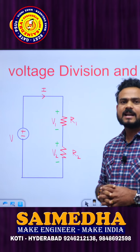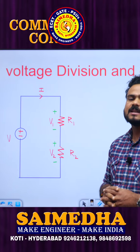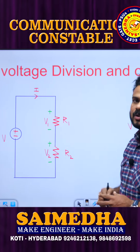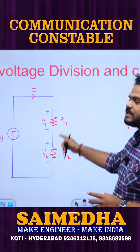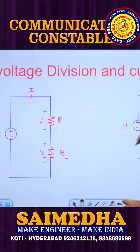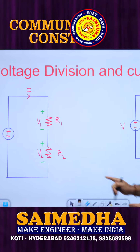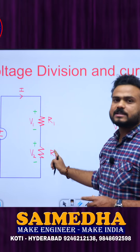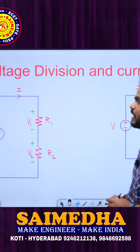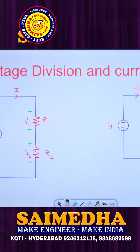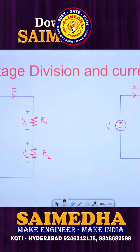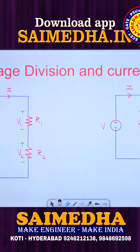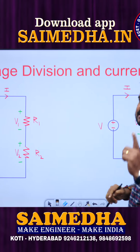Let us see voltage division and current division in the circuit which is given on the board. This is a series circuit and this is a parallel circuit. V1 is the voltage across R1 and V2 is the voltage across R2. The current through R1 is I1 and the current through R2 is I2.